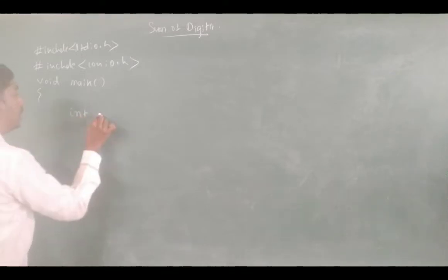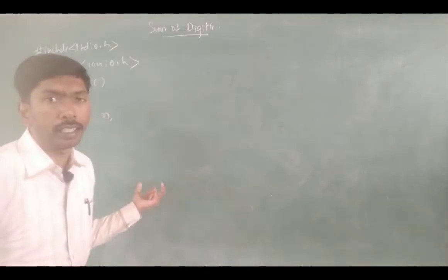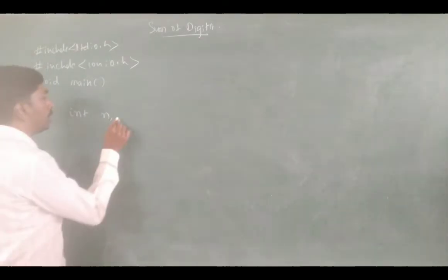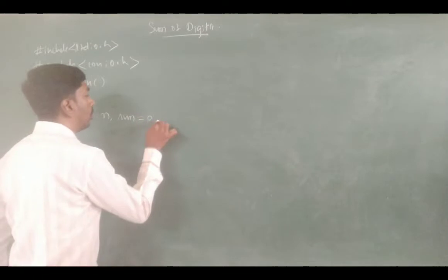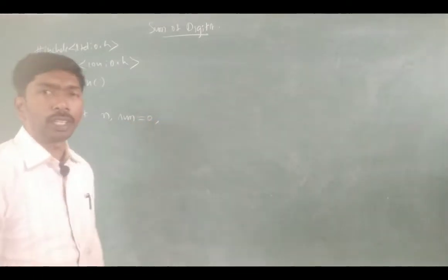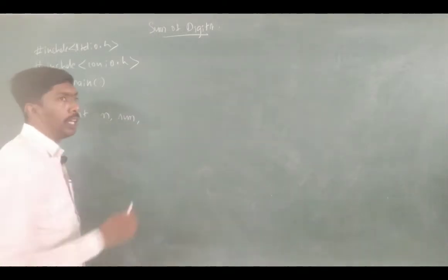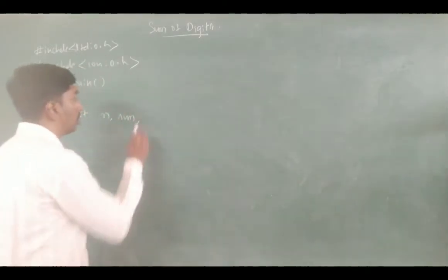Here we declare some variables. We need integer n for the number value, and sum, which is initialized to 0. Sum value is 0 — this is the initialization.